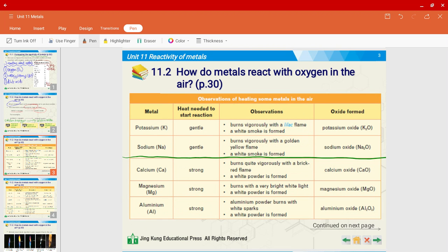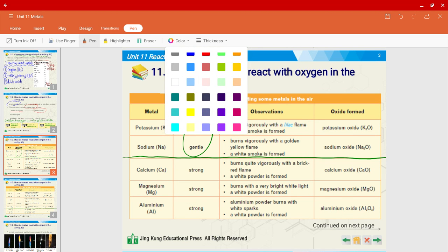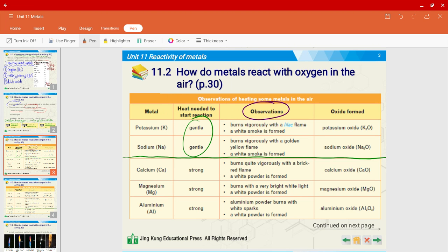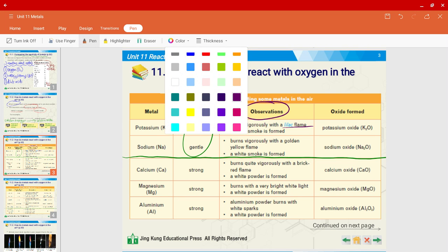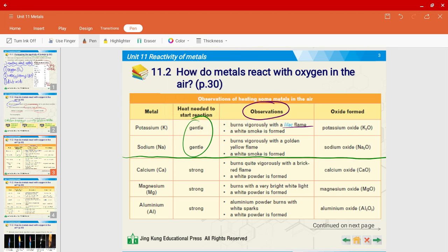Let me talk about the first group, potassium and sodium. Why are they in one group? Because these two metals are highly reactive so they only require a very small amount of heat, they require gentle heating to start a reaction. The second thing I want you to know is what observations do they give? Because metals reacting with oxygen in the air is very similar to what we have learned about in the flame test. So potassium when it reacts with oxygen it burns vigorously with a lilac flame. How about for sodium? Sodium will react to form a golden yellow flame. I'm using orange color because yellow will be hard to see.